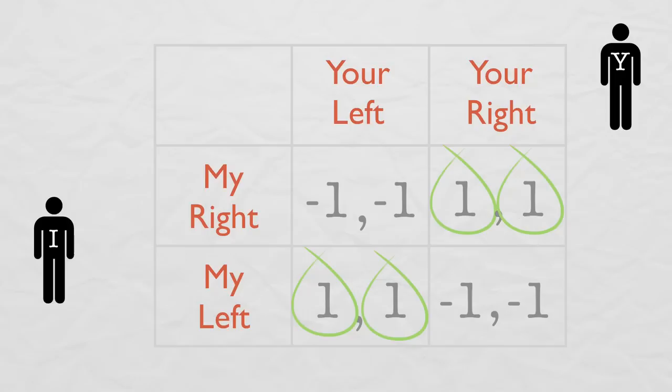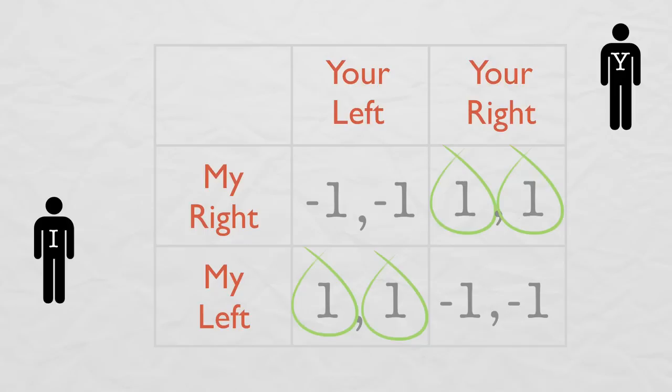What I've done here is circle all the best responses for each player. By the definition of a Nash Equilibrium, if we play strategies where I am playing my best response to you while you are playing your best response to me, that's a Nash Equilibrium. So you see, we have two Nash Equilibria in this game.